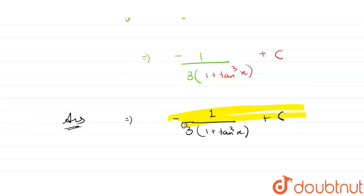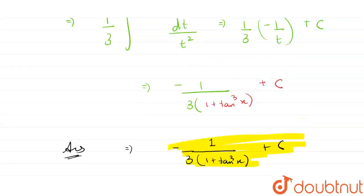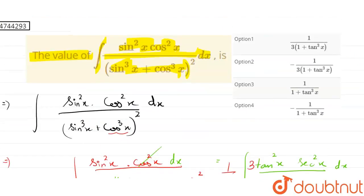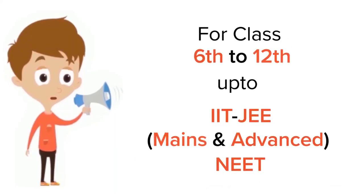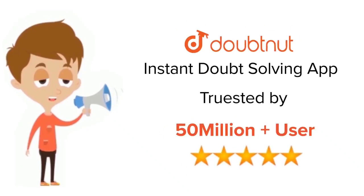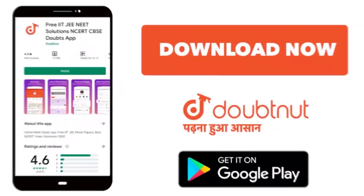This is the final answer: -1/(3(1 + tan³x)) + C. Let us see the options, so the correct option will be option number 2. Thank you! For class 6 to 12, IIT-JEE and NEET level, trusted by more than 5 crore students, download Doubtnut today.